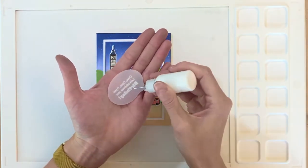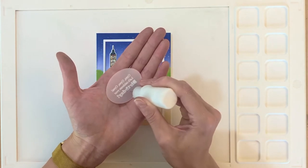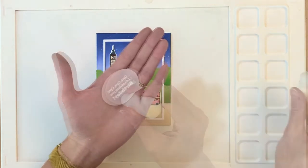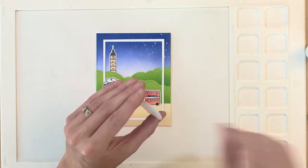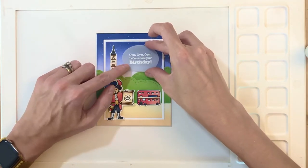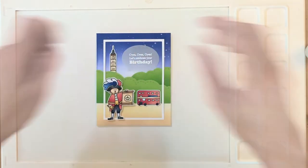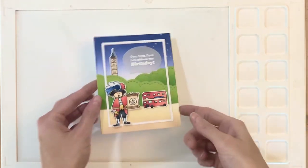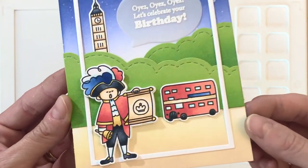Now for the sentiment, because it's vellum I have to be careful where I place glue. So I'm just putting small amounts of glue on the back side of the sentiment wherever that embossing is, and that will just hide the glue but give just enough of it for the sentiment to stick down.